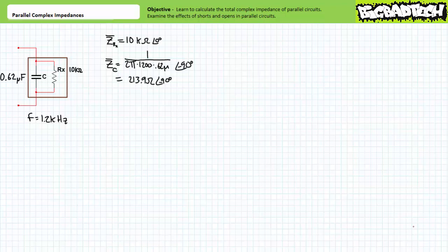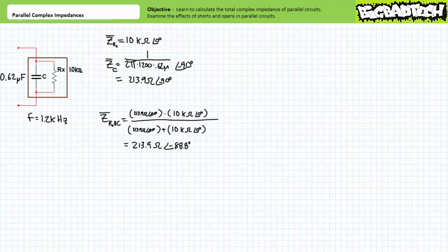Substituting our given values into the capacitive complex impedance formula, we find the capacitive portion to be an impedance of 213.9 ohms at an angle of negative 90 degrees. Calculating the total impedance of the parallel resistive and capacitive contributions, we find this non-ideal capacitor presents an impedance of 213.9 ohms at an angle of negative 88.8 degrees. Given negative 88.8 degrees is super close to negative 90 degrees, this non-ideal capacitor is still primarily capacitive; however, the angle shows it's slightly out of whack and not perfectly vertical anymore. Importantly, one must remember that the resistive and capacitive portions of this non-ideal capacitor are entirely inseparable — meaning the whole capacitor always represents a complex impedance of 213.9 ohms at an angle of negative 88.8 degrees at 1.2 kilohertz.